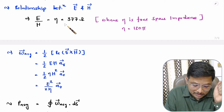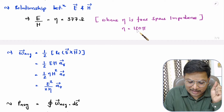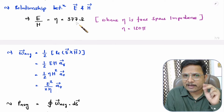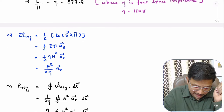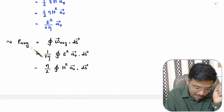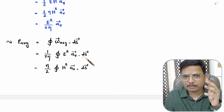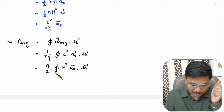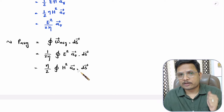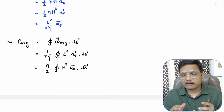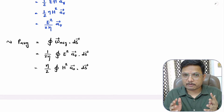In general, eta can be expressed as 120 pi, and its approximate value is 377 ohm. Based on this relation, one can identify average power. Sometimes you may be given the electric field and need to calculate accordingly; in future videos some examples will be solved. Sometimes you may be given the magnetic field, and in that case you use the corresponding equation. These are the basic relations for average power density and average power. If you have anything to share, please note it in the comment section. Thank you so much for watching.